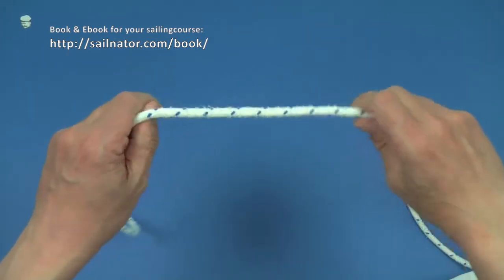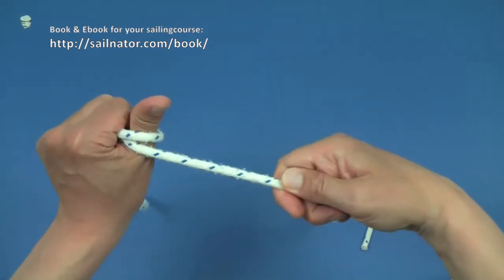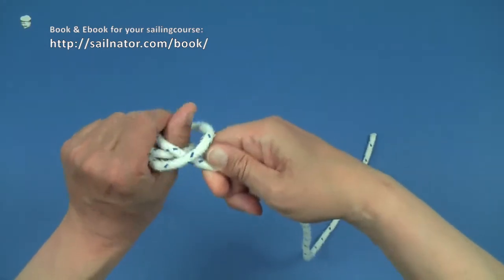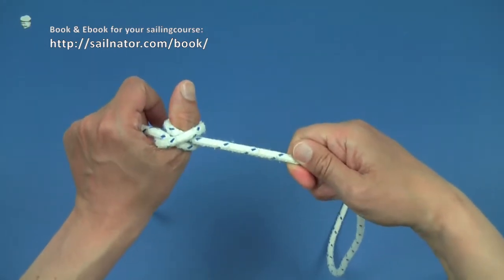We use the thrown clove hitch, for example, when we want to attach a line on a mooring post quickly while keeping it under tension.